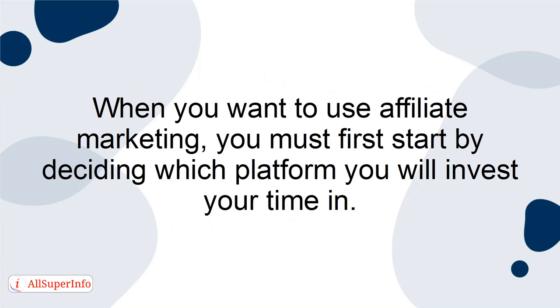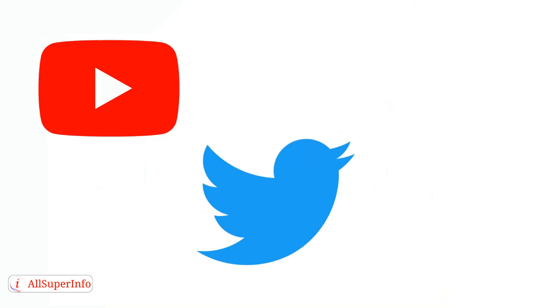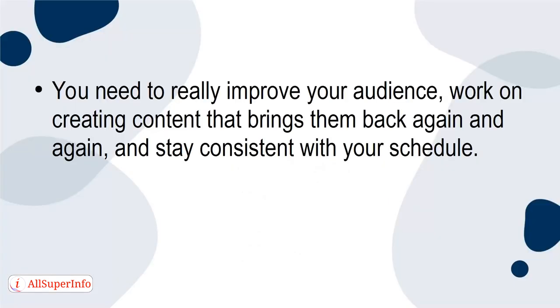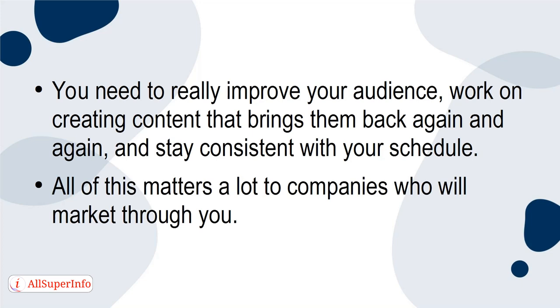When you want to use affiliate marketing, you must first start by deciding which platform you'll invest your time in. Is it your YouTube channel? Maybe you're going to start marketing on Twitter or TikTok. Whatever choice you make, stick with it, especially at the beginning. You need to really grow your audience, work on creating content that brings them back again and again, and stay consistent with your schedule. All of this matters a lot to companies who will market through you.